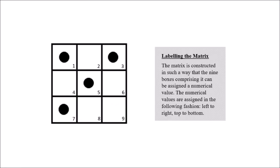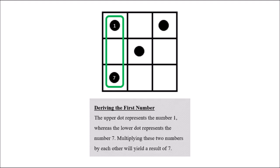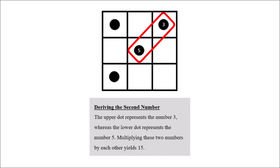The first dot will have a value of 1, the second dot will have a value of 3, the third dot will have a value of 5, you get the idea. To derive the first number, we will multiply the numerical values which correspond to the dots that have not been overlapped. Since 1 by 7 is equal to 7, the first number is 7. To derive the second number, we will multiply the numerical values which correspond to the dots that overlap each other. Since 3 by 5 is equal to 15, the second number is 15.